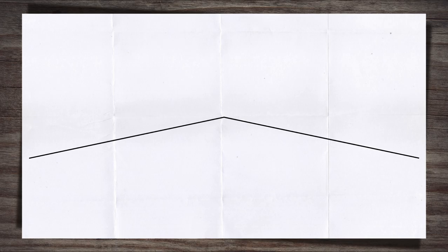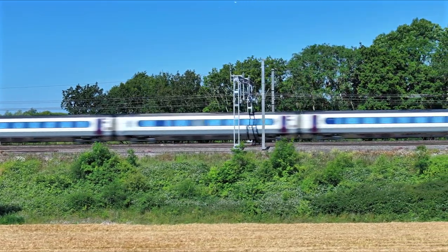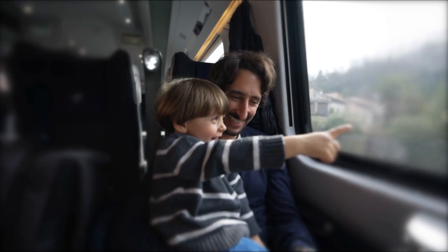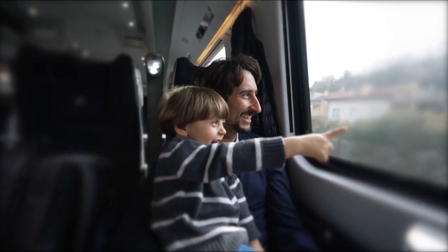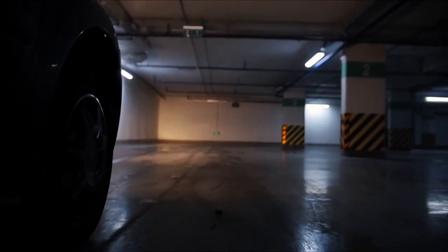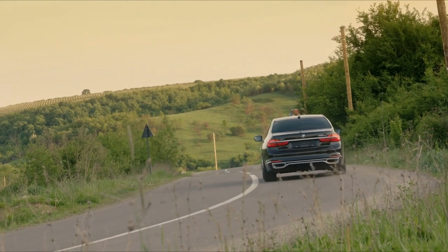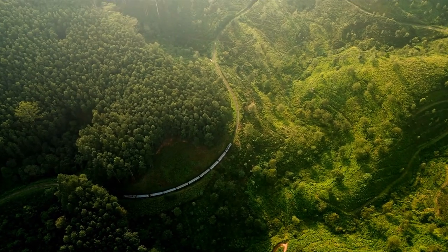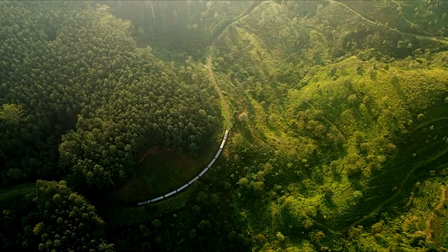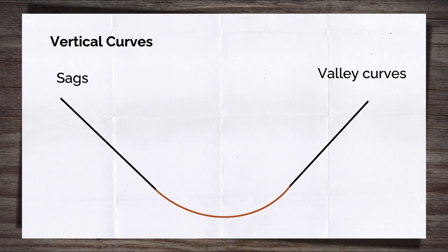Vertical curves are exactly what they sound like — curves in the vertical plane that smooth out transitions between gradients. They provide a smooth link between gradients, easing the passage of trains and helping manage passenger comfort as well as the stresses on the railway infrastructure. Think of vertical curves like speed bumps stretched out over hundreds of metres — if a speed bump is too steep, your car would jolt violently, but a long shallow one makes for a smooth transition. That's exactly what we're aiming for in railway vertical alignment. Vertical curves come in two forms depending on the gradients they're joining: hogs and sags. Hogs, also known as crests or summits, are convex curves that typically connect an upward gradient to a downward one. Sags, also known as valleys, are a concave shape and join a falling gradient to a rising one.